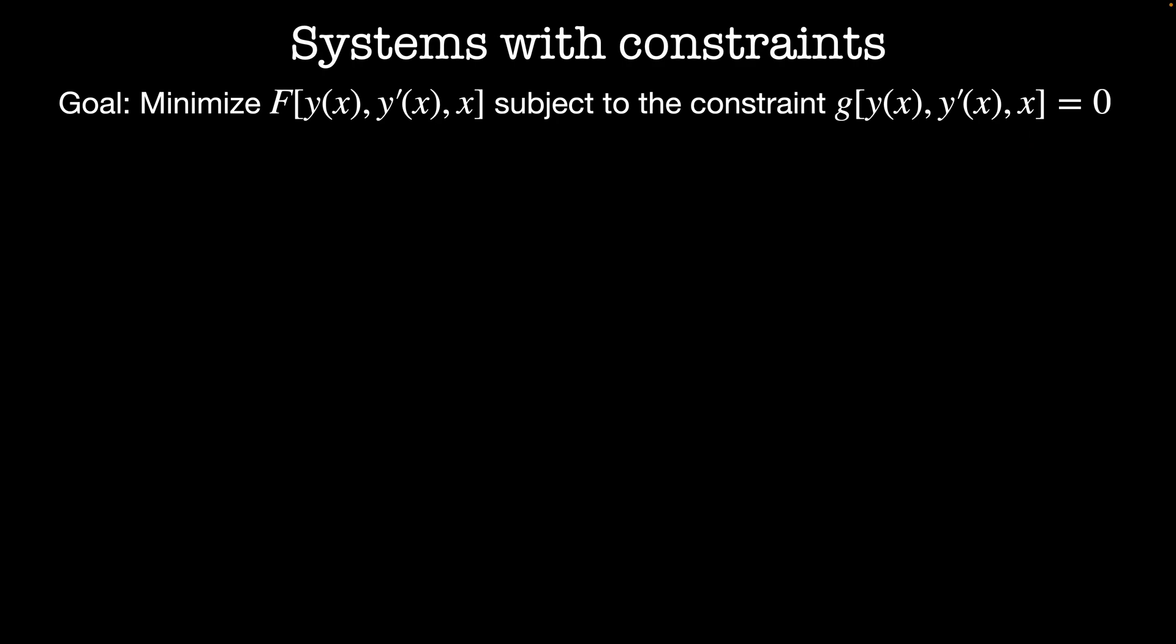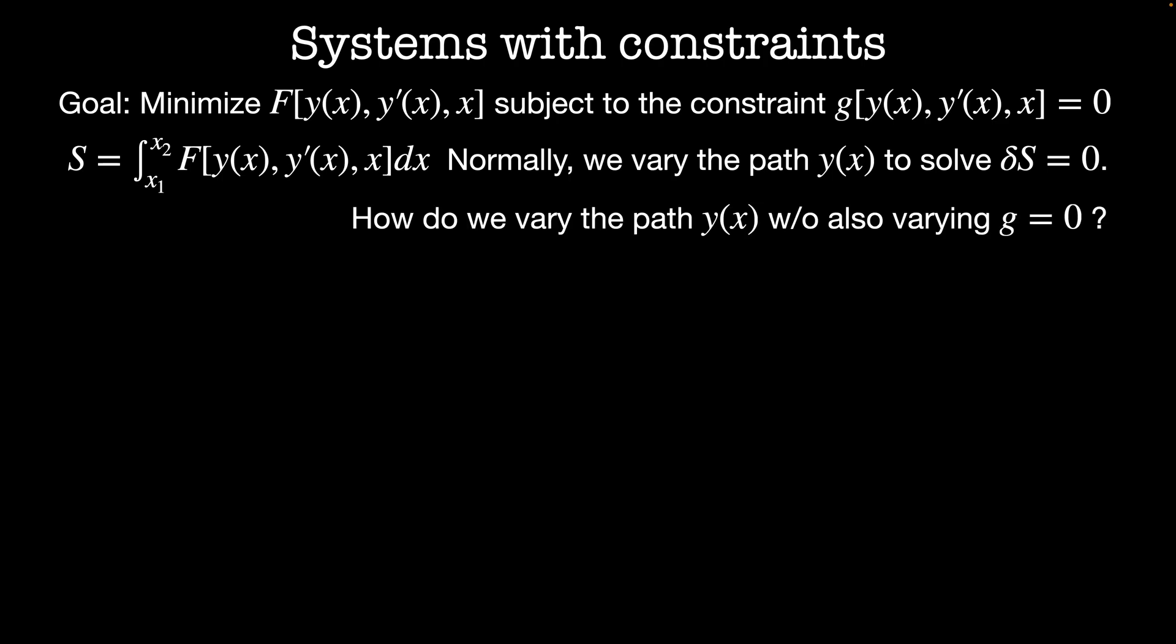Previously we defined a quantity called the action as the integral from x1 to x2 of f of y of x, y prime of x, and x dx. And what we did is we tried to vary the path y while simultaneously keeping delta s equal to zero. Now we want to add in a constraint. How do we vary the path y without also varying the constraint g equals zero? If g is equal to zero at all times then delta g must also be equal to zero at all times.